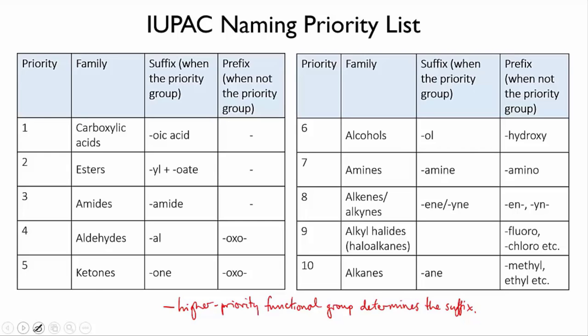For instance, when a molecule just has an aldehyde group in it, the name ends with the suffix AL. But say it has both an aldehyde and a carboxylic acid. Then the name will end in the suffix OIC ACID, because the carboxylic acid is higher priority, and somewhere at the front of the name we will have a substituent called OXO, which indicates the lower priority aldehyde group.